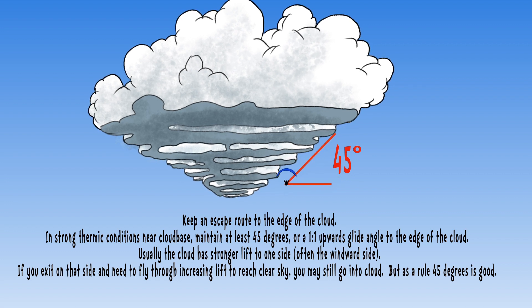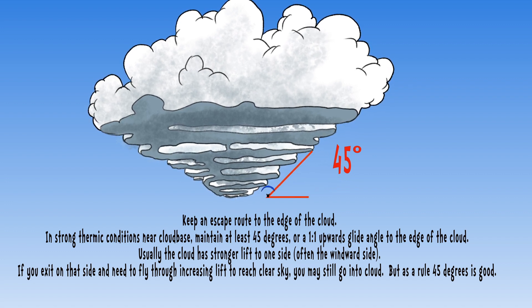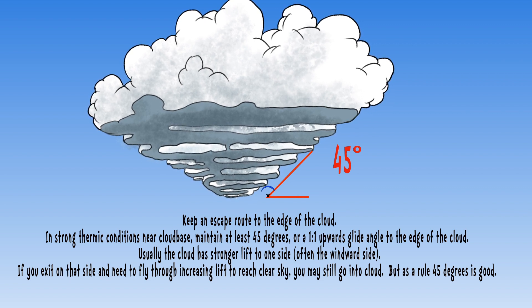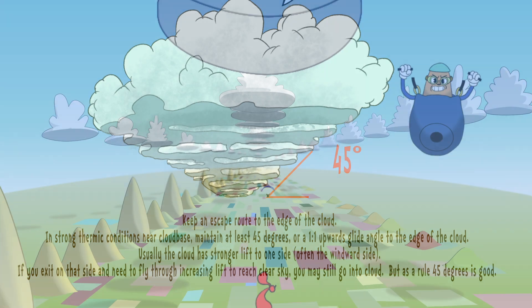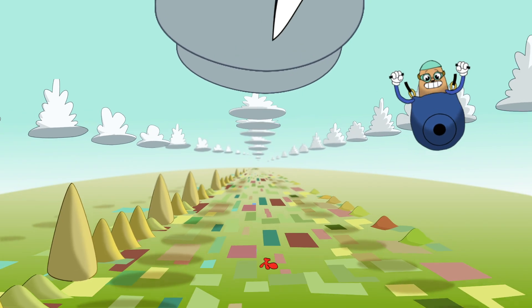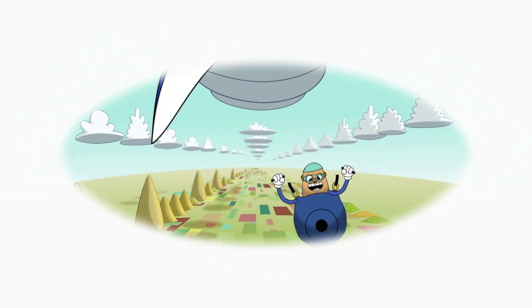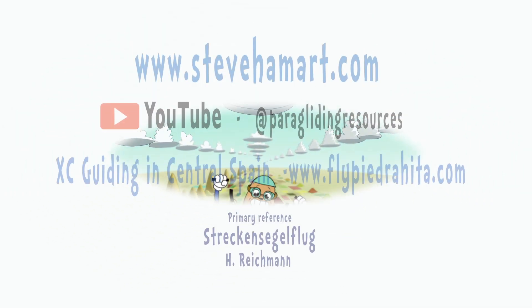A good rule of thumb is to use a 45-degree angle to the edge of the cloud as your imagined possible upward glide angle. In really strong lift, even this may not save you from entering cloud. Using your experience of the day's conditions you can adapt this angle — be more cautious on stronger days, or allow yourself to go more to the centre of the cloud on weaker days.